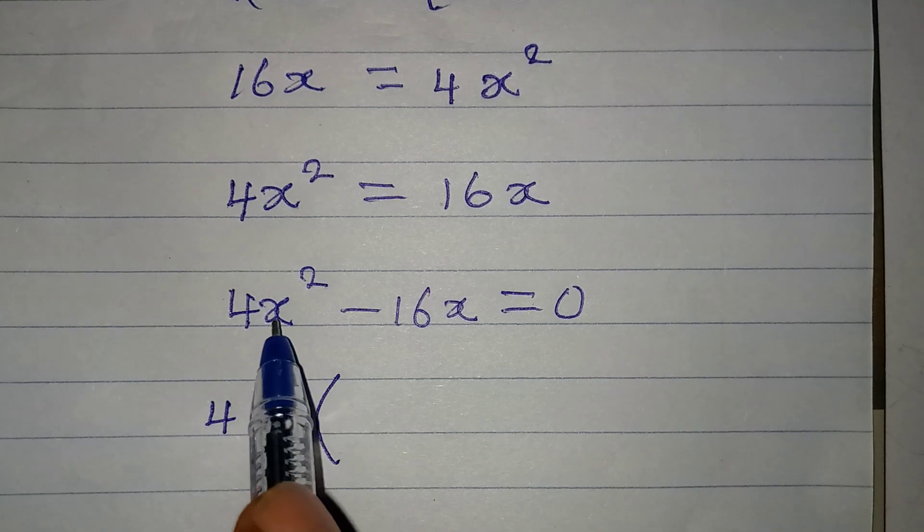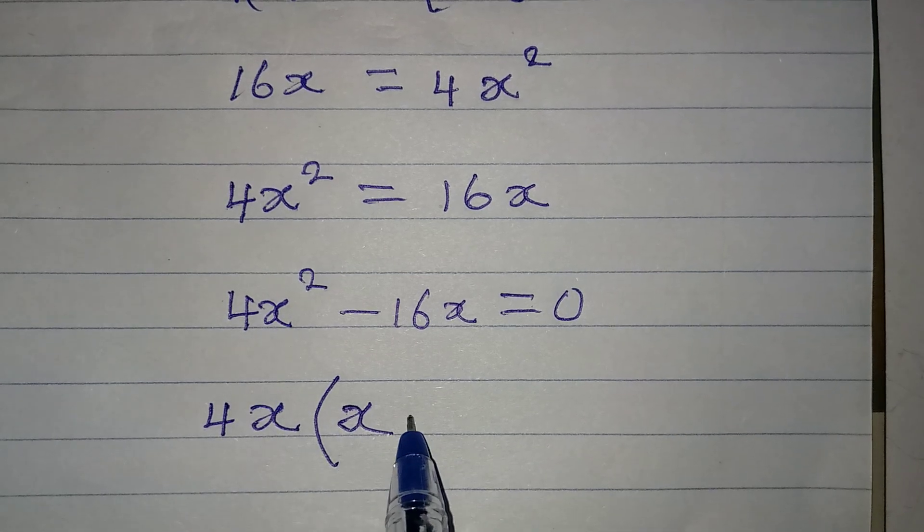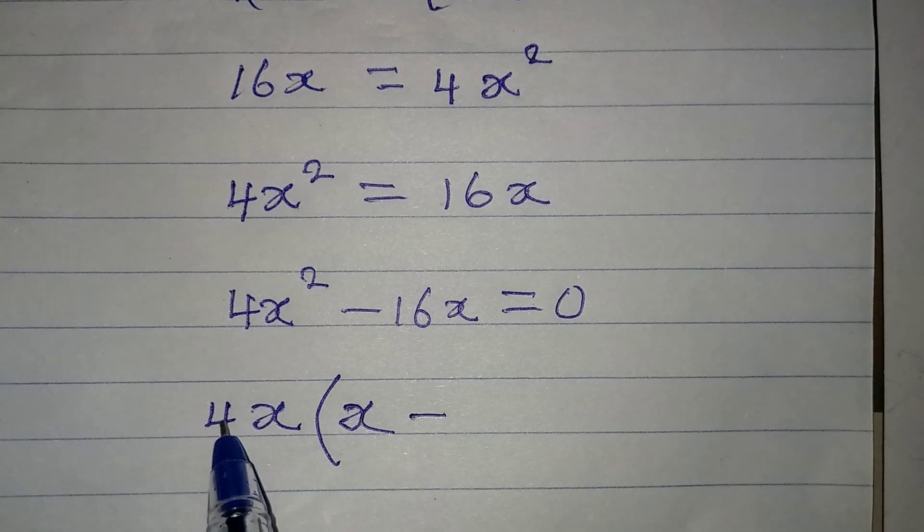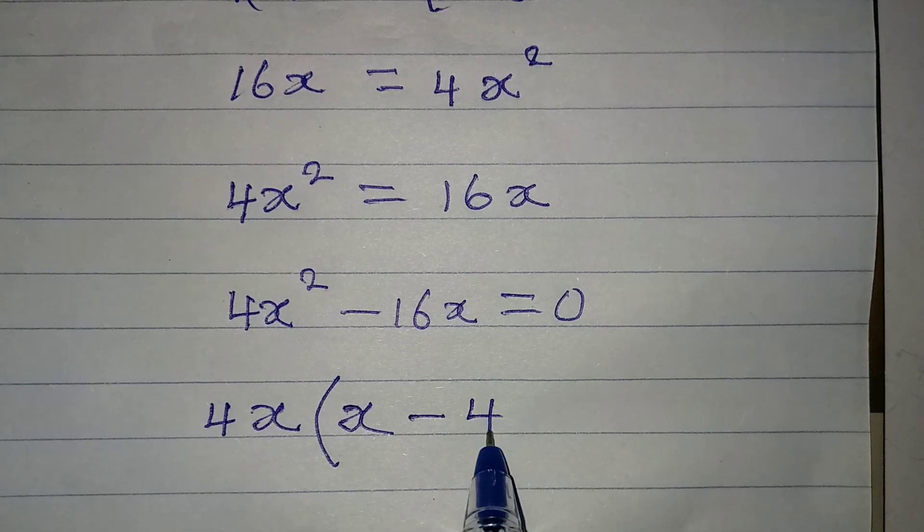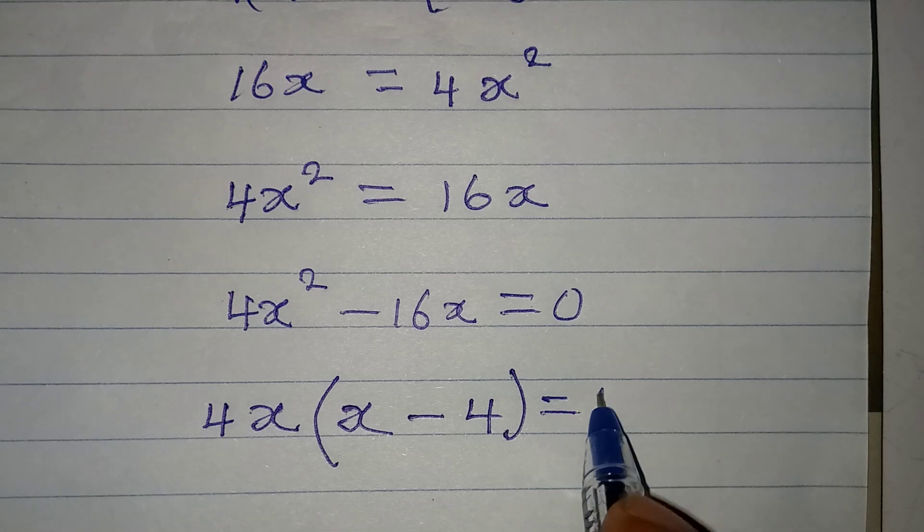Now, open this bracket. 1x has come out, so it's only x that will remain over there. Then, minus 4 into 16 will have 4 and then x has come out. Then, this will be equal to 0.